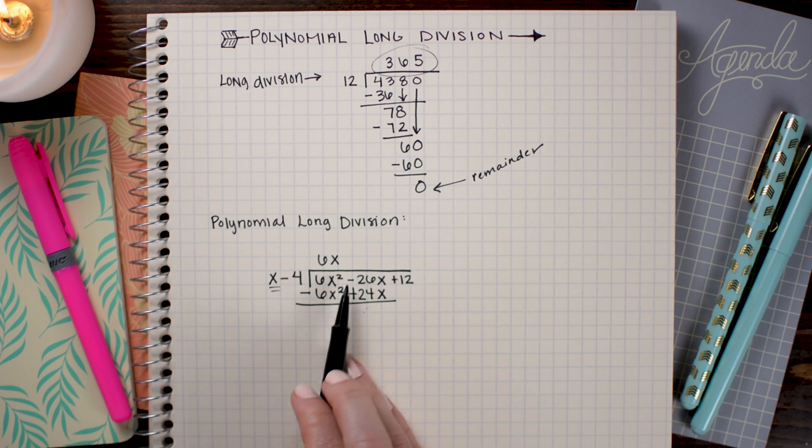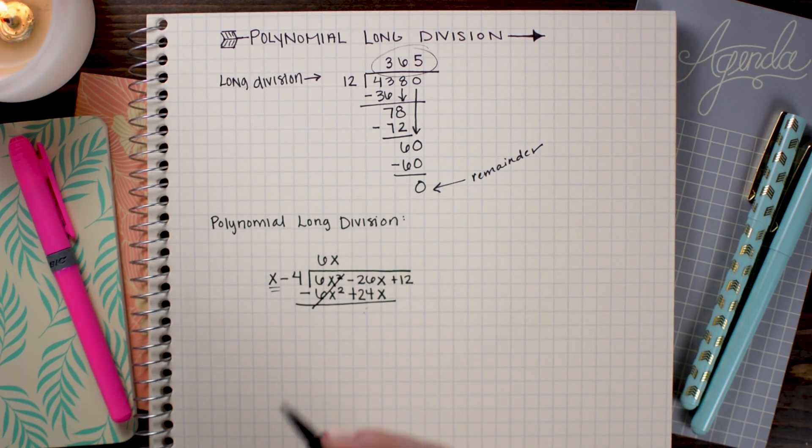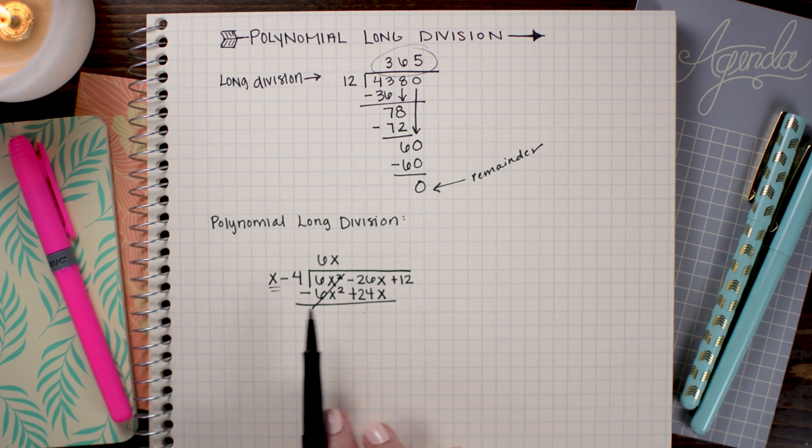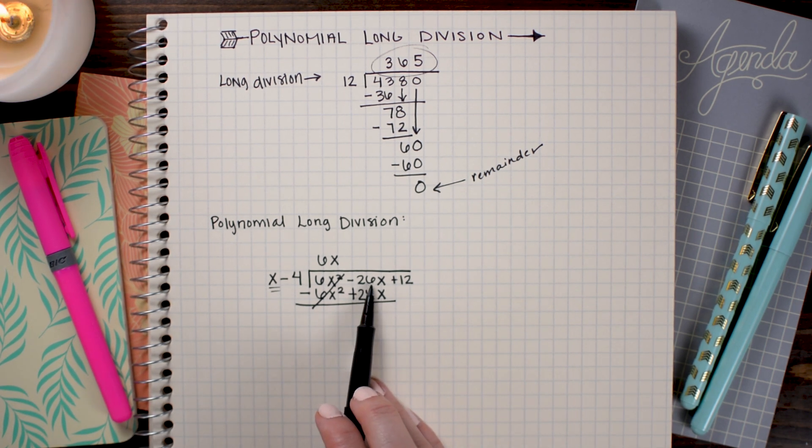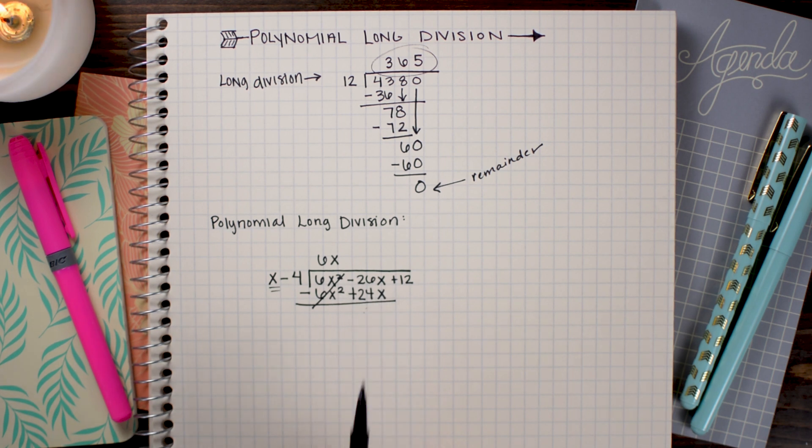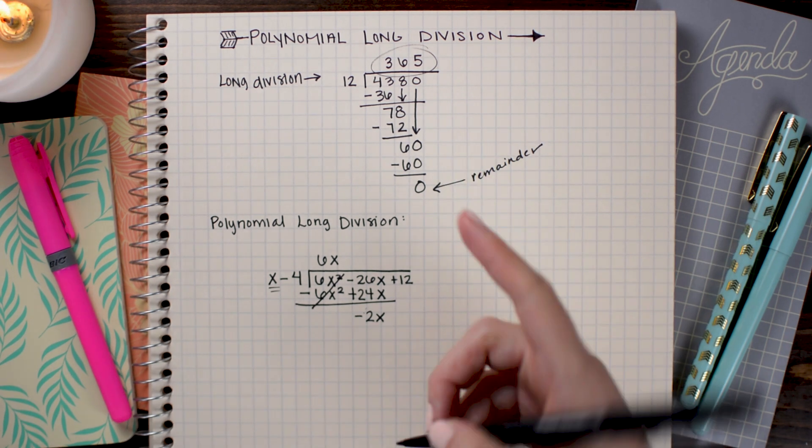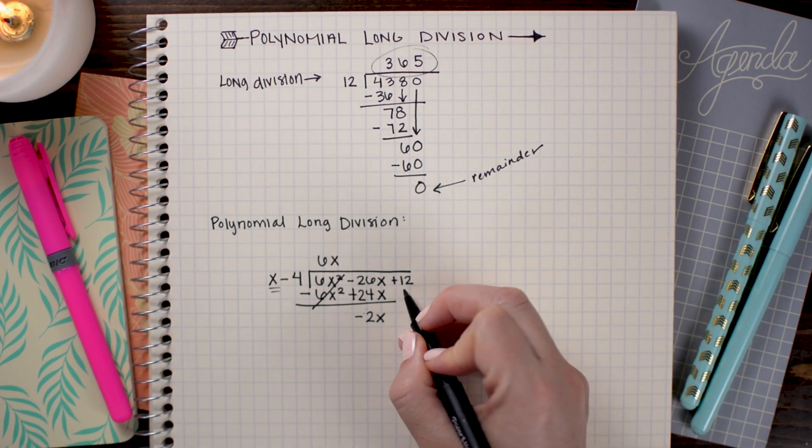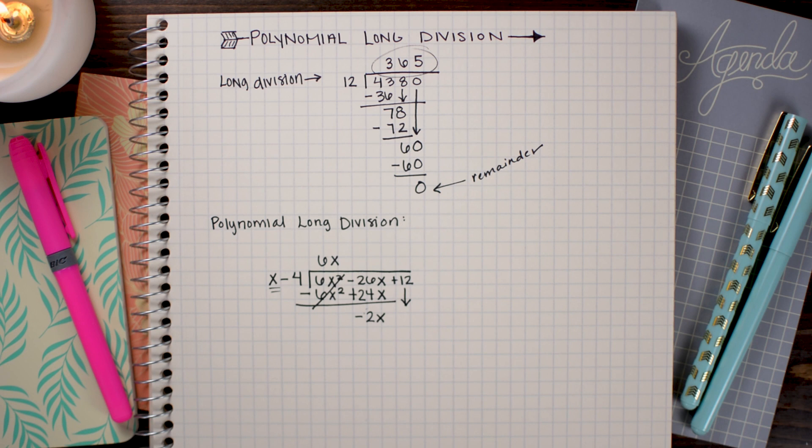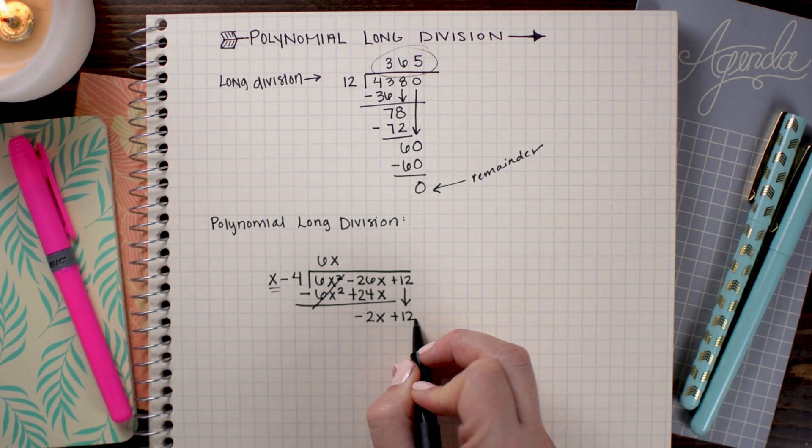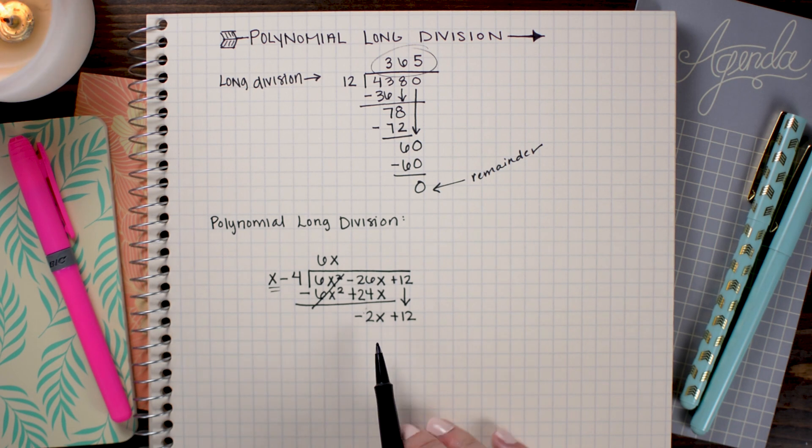6x² - 6x² is 0, which is what should happen, right? Because we chose this value so that it matched 6x². And then -26x + 24x is equal to -2x. Just like in our regular long division up here, we bring down the next term. And this time I'm just going to write +12 on the end.